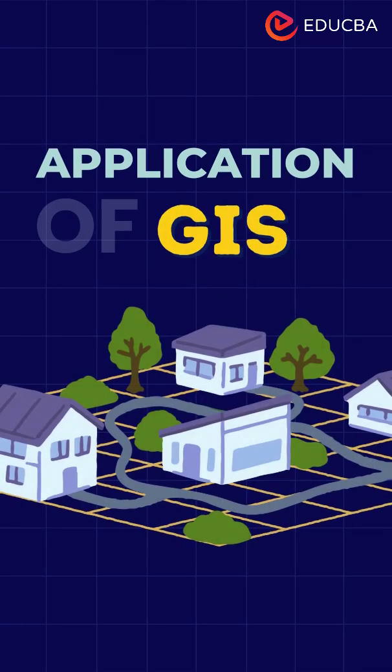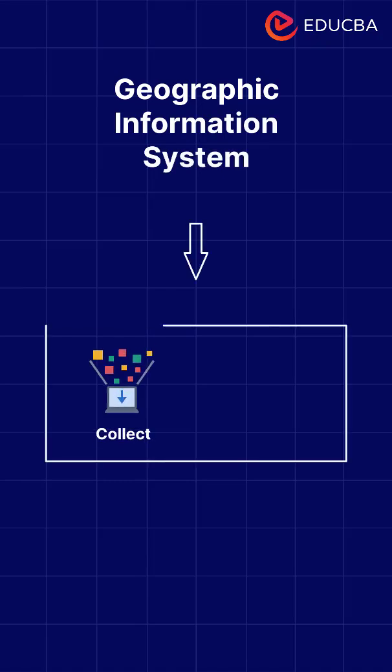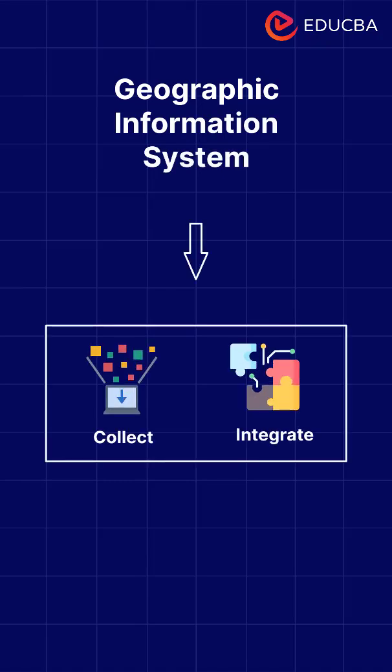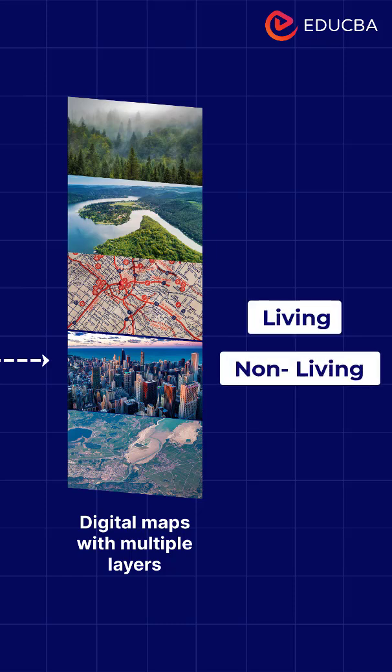Applications of GIS. Geographic Information Systems, or GIS, collect and integrate data to create digital maps with multiple layers that depict the spatial distribution of living and non-living entities.